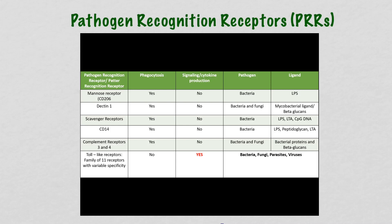The important things to note from this table are that all the PAMPs are either structurally crucial to the pathogen or are part of the pathogen's genome, and it covers bacteria, viruses, fungi, and parasites — all classes of pathogens. You don't really need to know this whole table, except for CD14, which is pretty important. Almost all of these receptors have the ability to cause phagocytosis. But the second thing that needs to happen when a macrophage encounters a pathogen is cytokine production, and there is only one class of receptors here that leads to cytokine production. This is the most important class of PRRs, and you do need to know them.